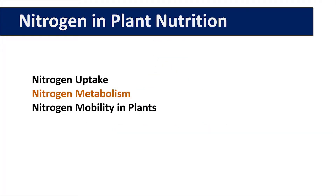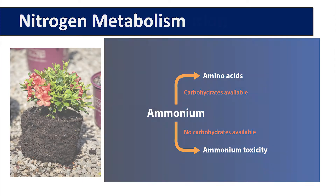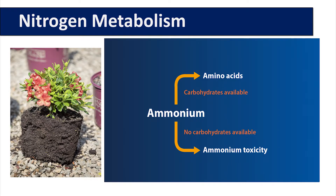In nitrogen metabolism, if there are sufficient carbohydrates in the plant, ammonium is immediately assimilated into amino acids, which are then incorporated into protein structures. If there are insufficient carbohydrates, the plant will have to assimilate what it can into amino acids. However, ammonium cannot be stored as a nitrate, therefore ammonium toxicity can occur.